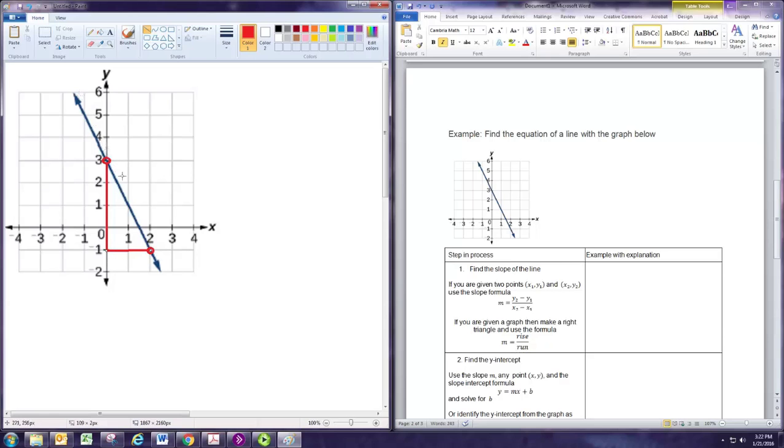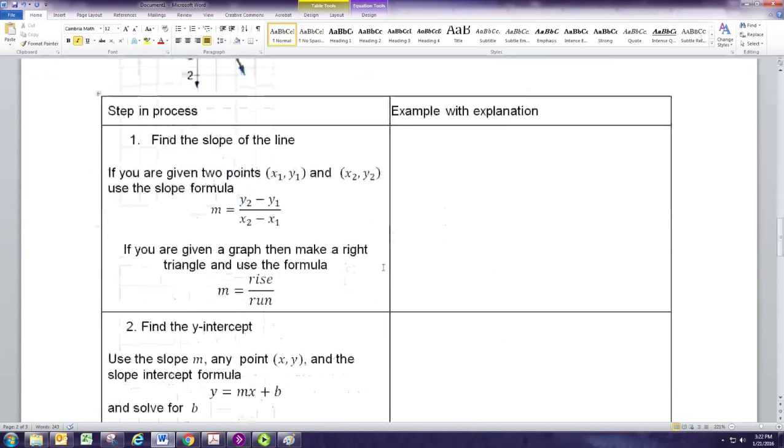Now if the line is decreasing, or goes down as you go left to right, then you're going to want to make sure that the run is negative. So as you move from this point, that one you go down 4, right 2. Okay, so we had rise is equal to negative 4, and run is equal to 2. So that means our slope is negative 4 over 2, which simplifies to negative 2.